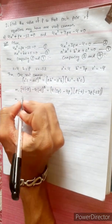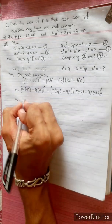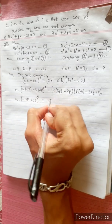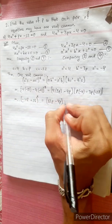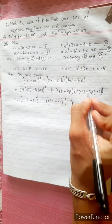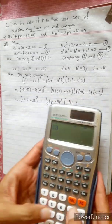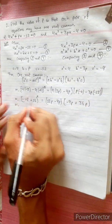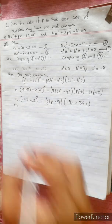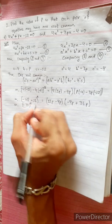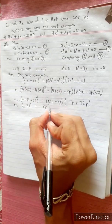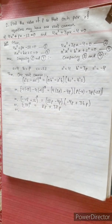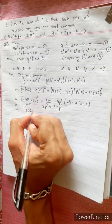Simplifying: (-16 + 48)² = (12p - 4p)(-4p + 36p). This gives: (32)² = 8p × 36p. So 1024 = 288p², and then -32 squared equals 1024, which equals 8p multiplied by 36, giving 288p².